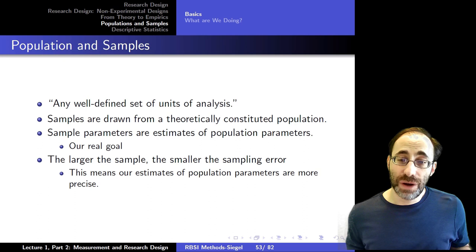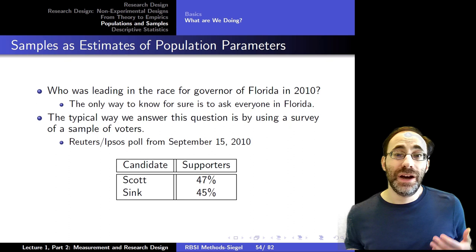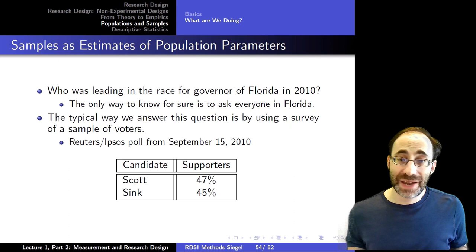The bigger the sample, the more accurate you are and the smaller your sampling error is, but there's always going to be some sampling error until you get the entire population. To see how this works, let's talk about a particular example: a survey asking who is leading the race for governor in Florida in 2010.